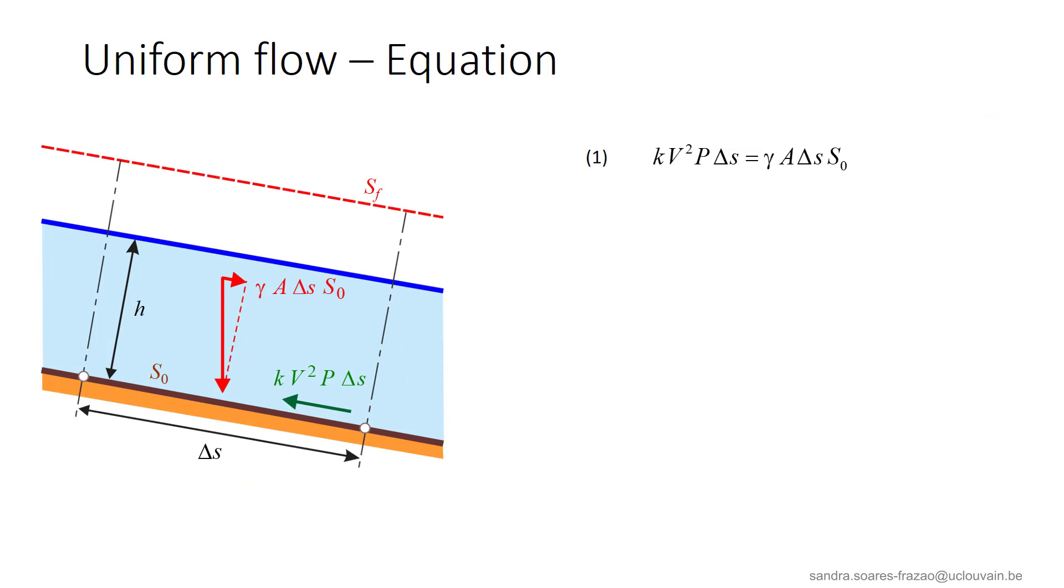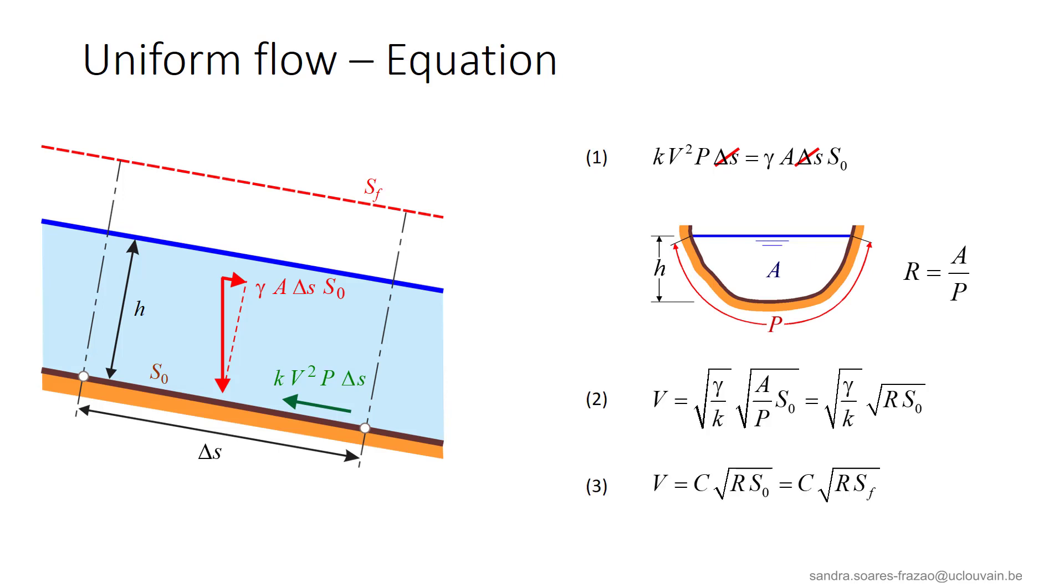In equation 1, delta S can be simplified. Then, remembering the definition of the hydraulic radius, we can isolate the velocity as done in equation 2. The first term here is a constant friction coefficient, that is the Chézy coefficient, from the name of this French engineer who worked on the design of navigation canals.